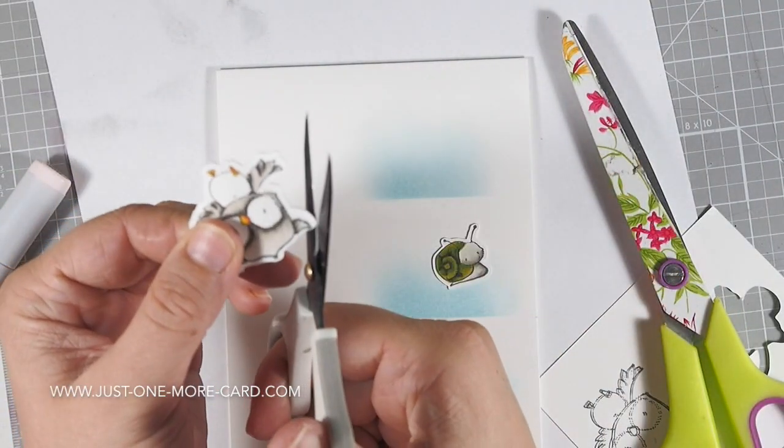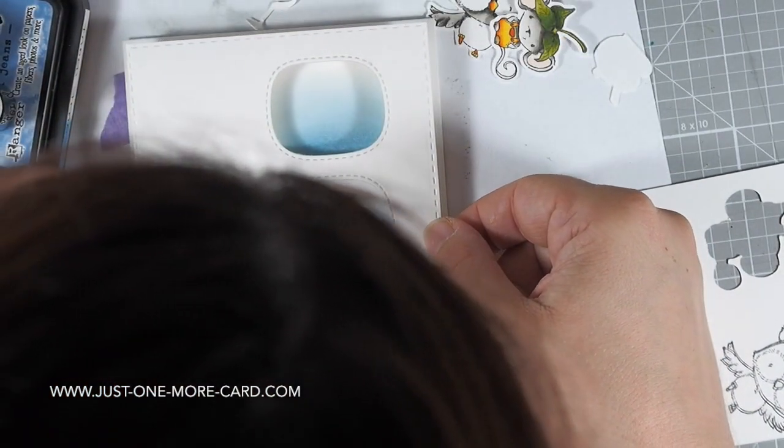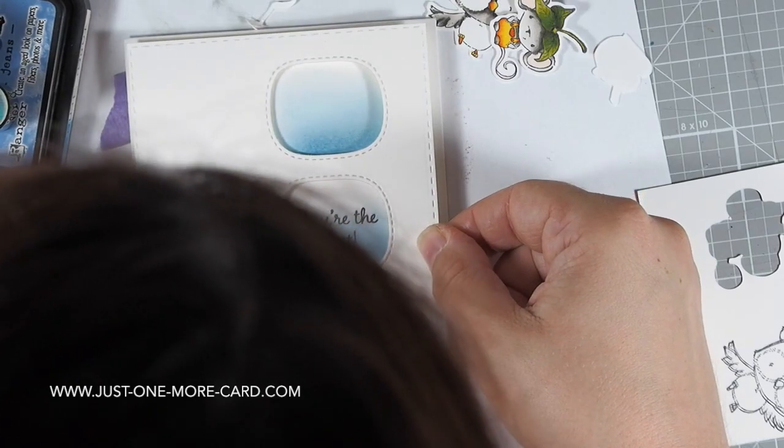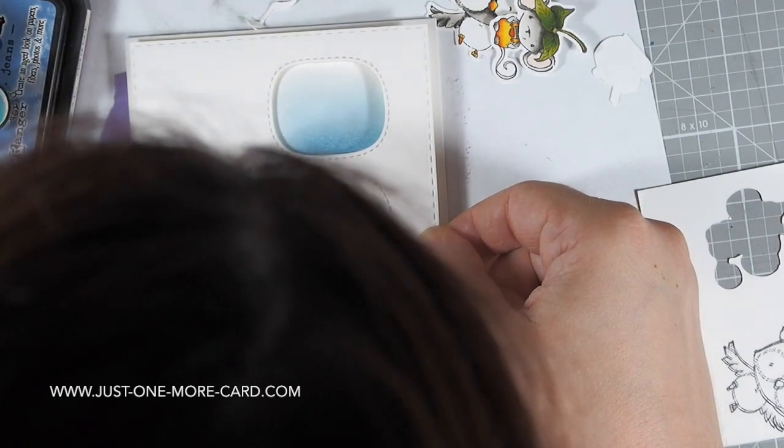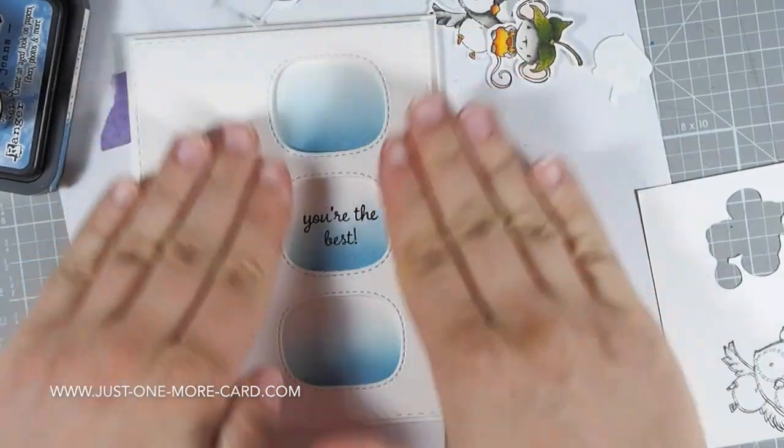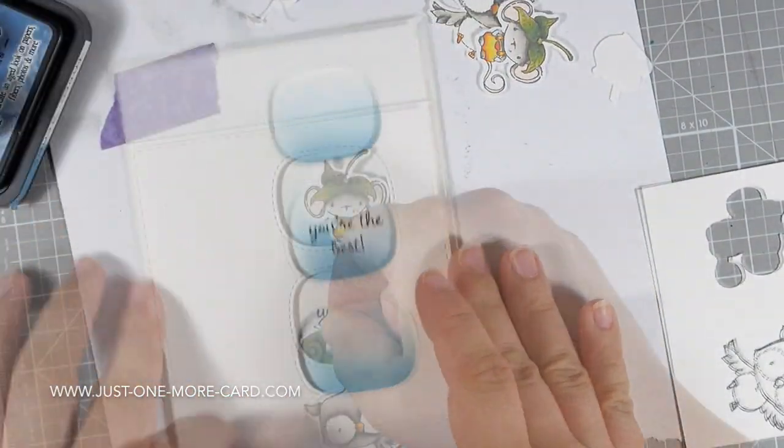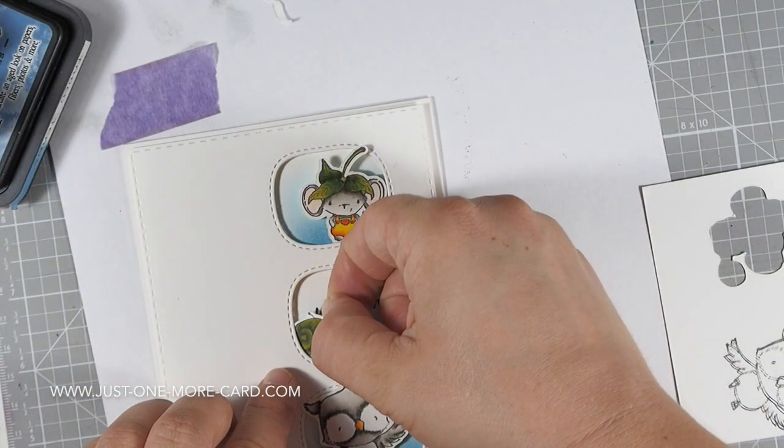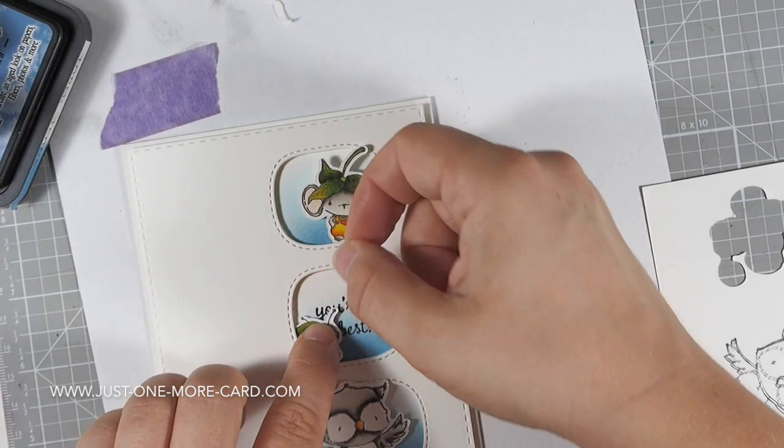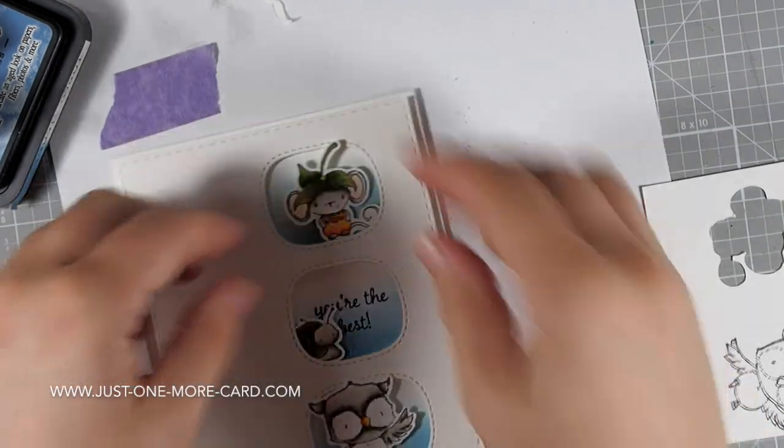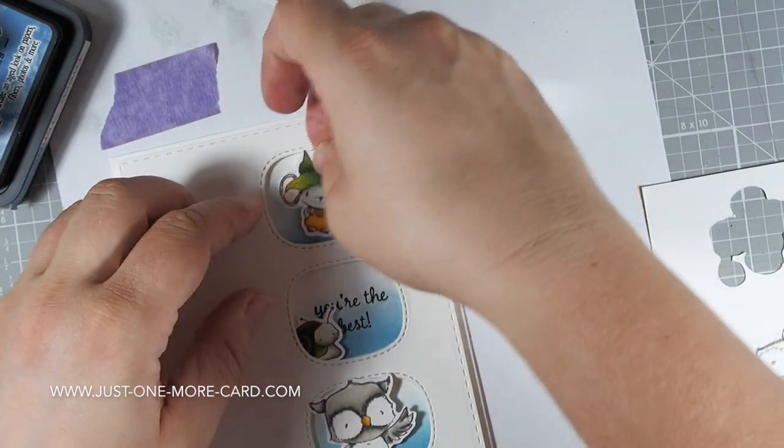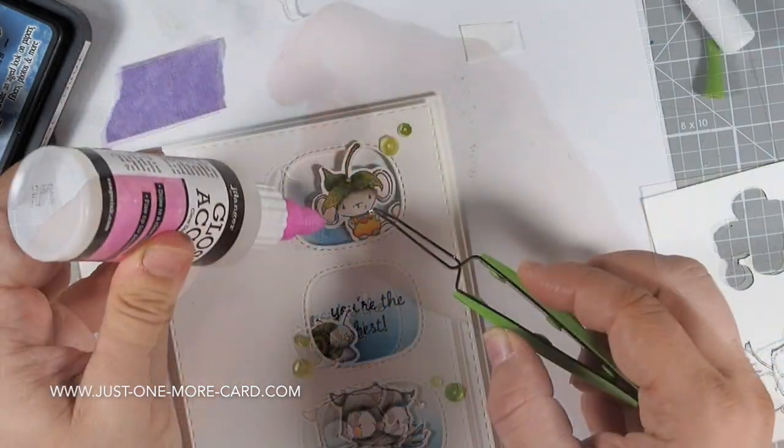And then I grabbed my scissors and I just trimmed down this huge border to a much smaller border, a much narrower border. I added a sentiment also from Purple Onion Designs into one of those openings using my Stampin' Magic and then I'm using some foam behind this panel to mount it. And I'm adding also some foam behind those critters here and putting them into those windows so they will peek out.